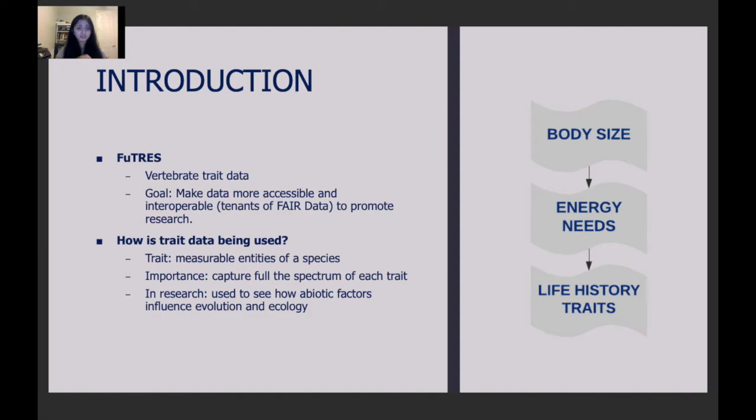So, how is trait data being used? Starting off, you might ask what are traits? Traits are measurable entities of a species that can be used to capture the full spectrum of each trait amongst a species. In research, traits are used to see how abiotic factors influence evolution and ecology.